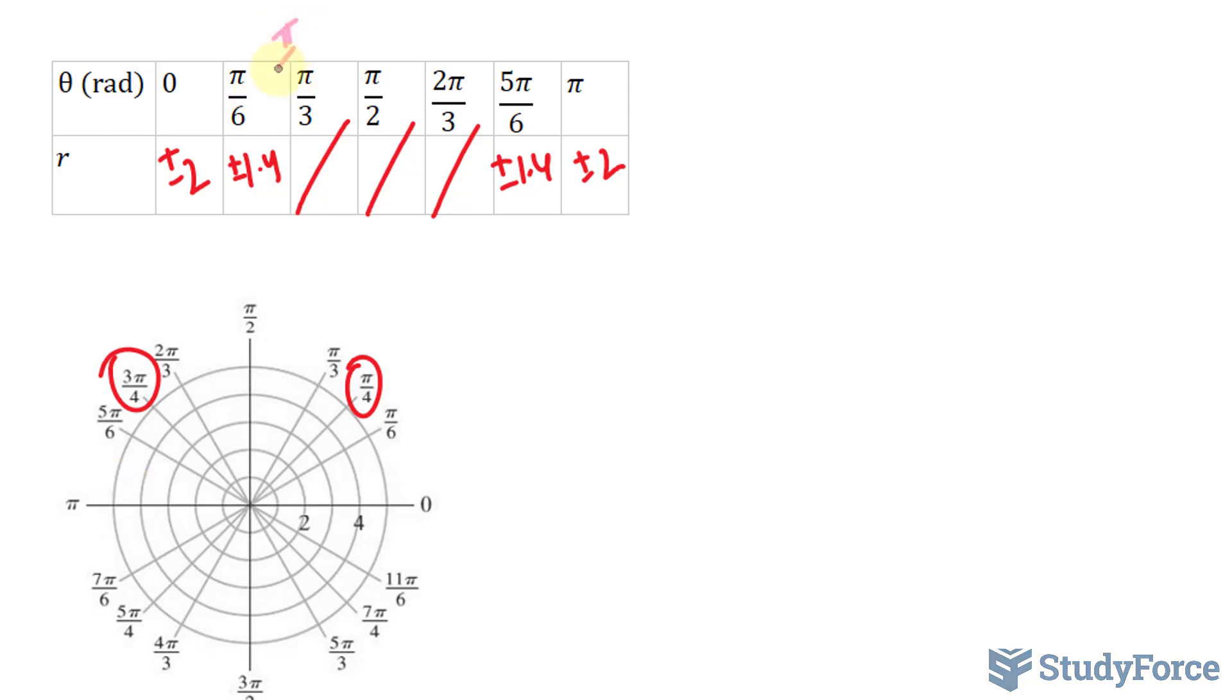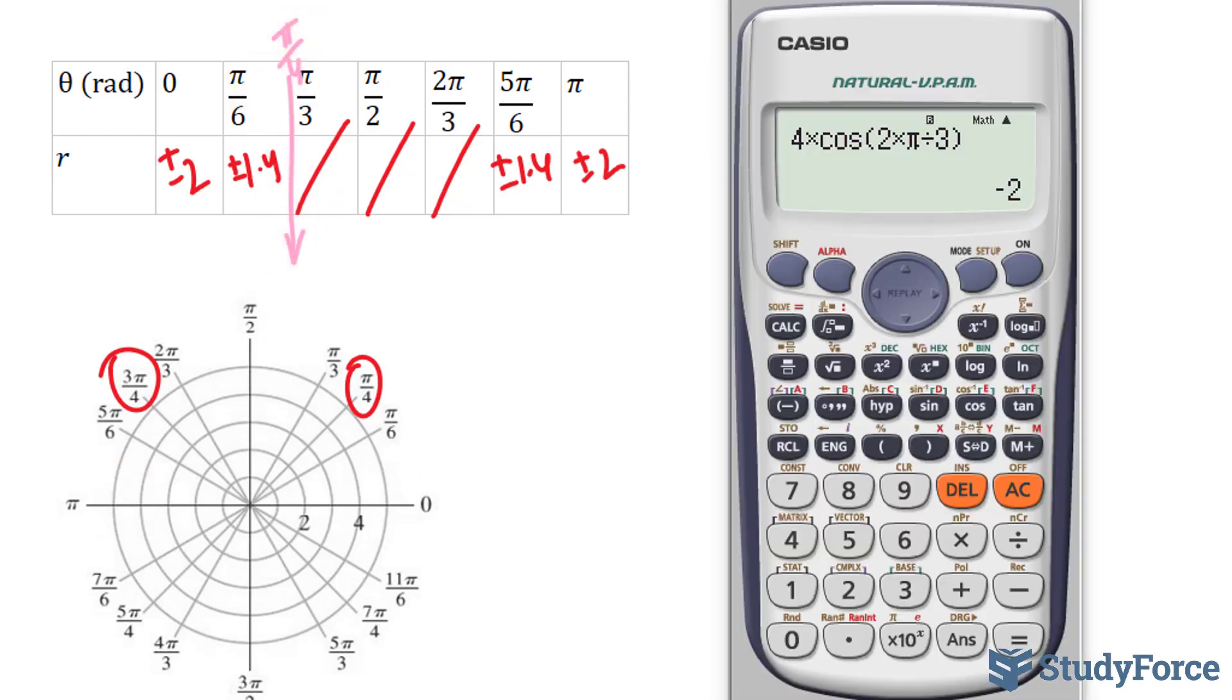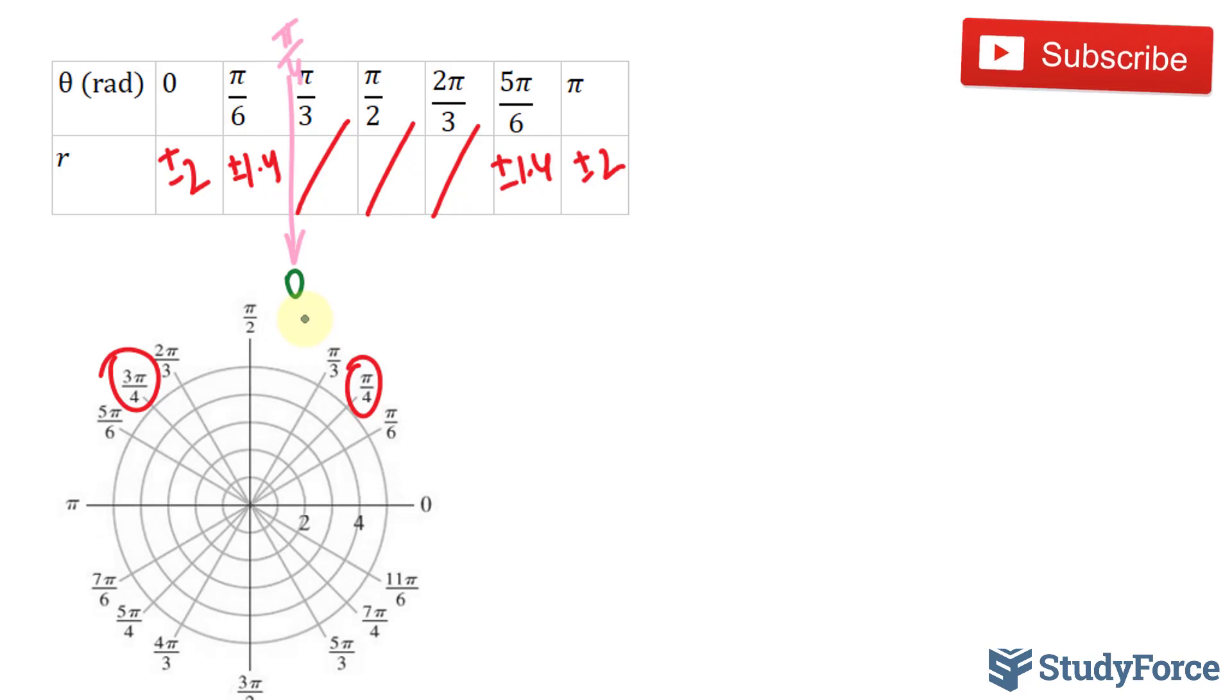What you can do is find out what happens at pi over 4 and 3 pi over 4. So at pi over 4, let's use our calculator, we'll end up with 0. The square root of 0 is 0. And the same thing at 3 pi over 4, we get 0.